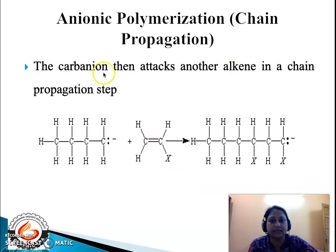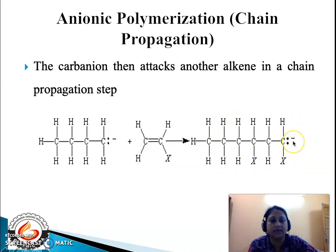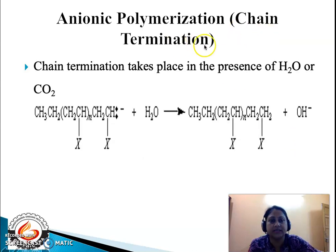Under chain propagation, the carbanion formed in the previous step attacks another similar monomer to give rise to another long carbanion, evident by the presence of a negative charge. Under chain termination, the anionic polymerization process is very sensitive to solvent, and in the presence of water the polymerization process terminates to give rise to an adhesion polymer.